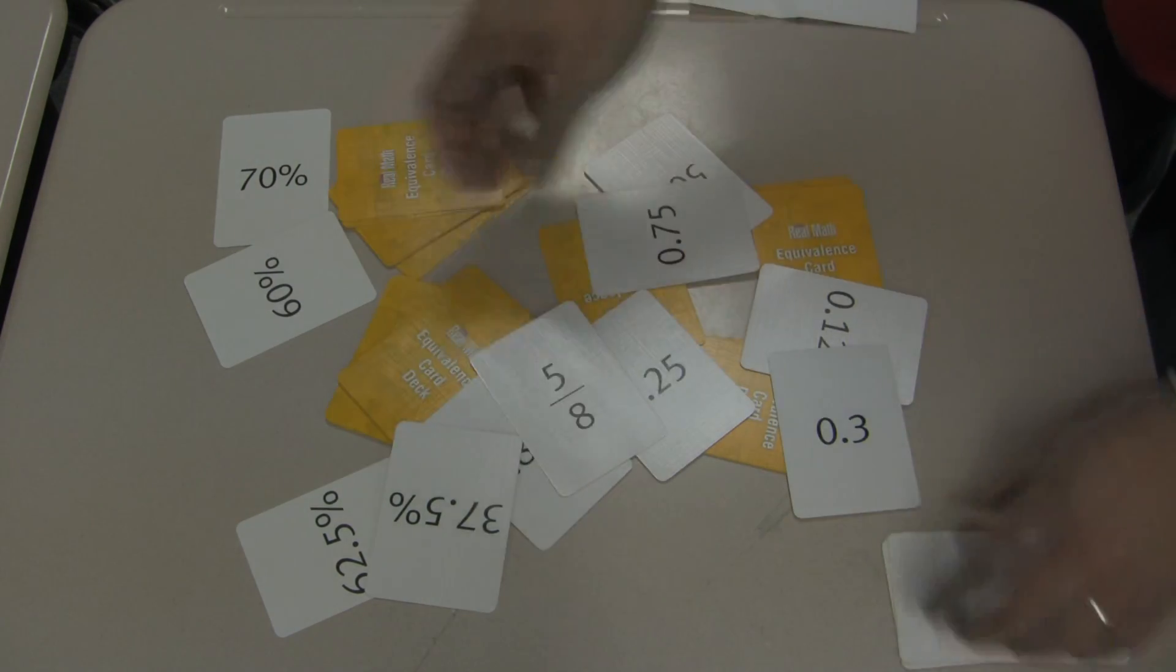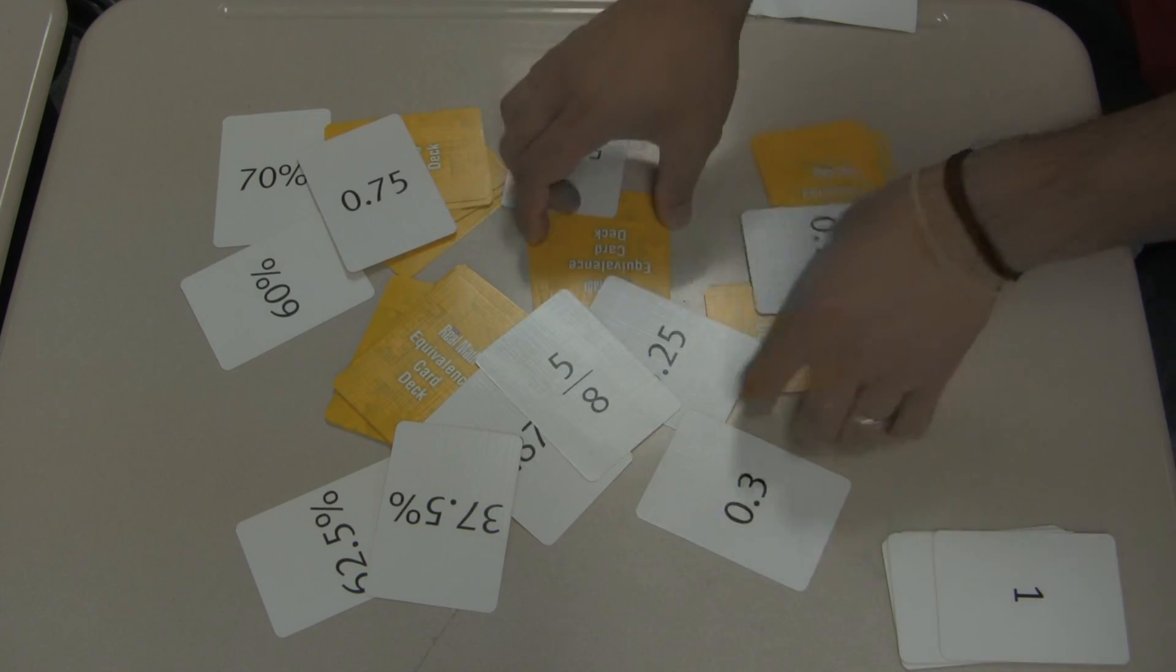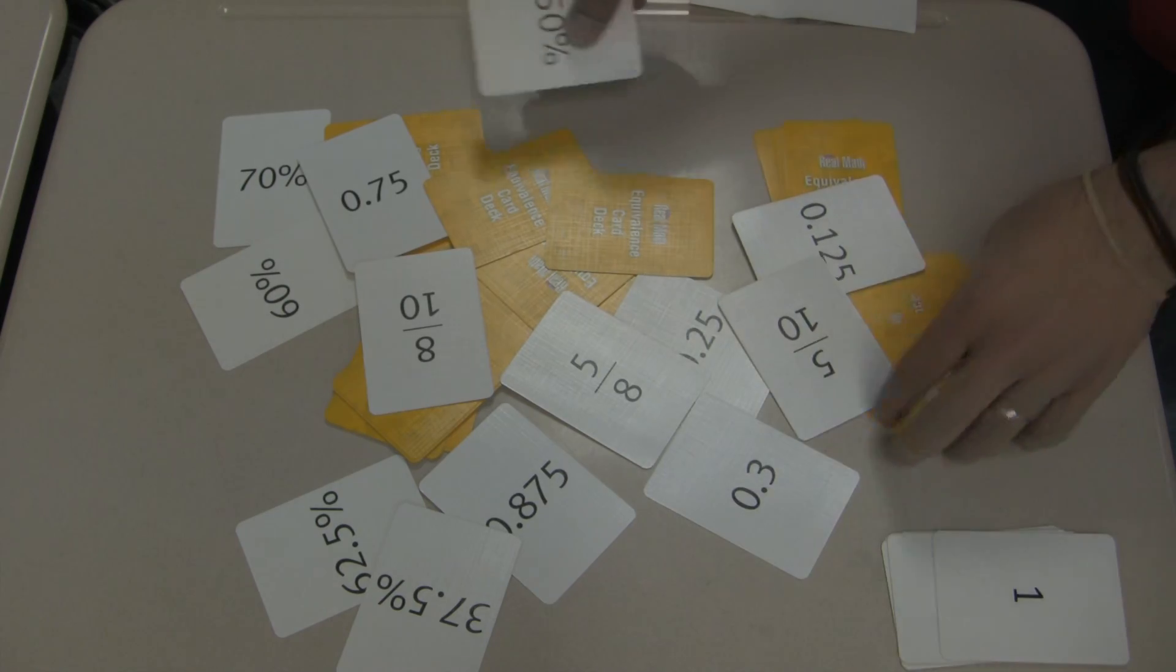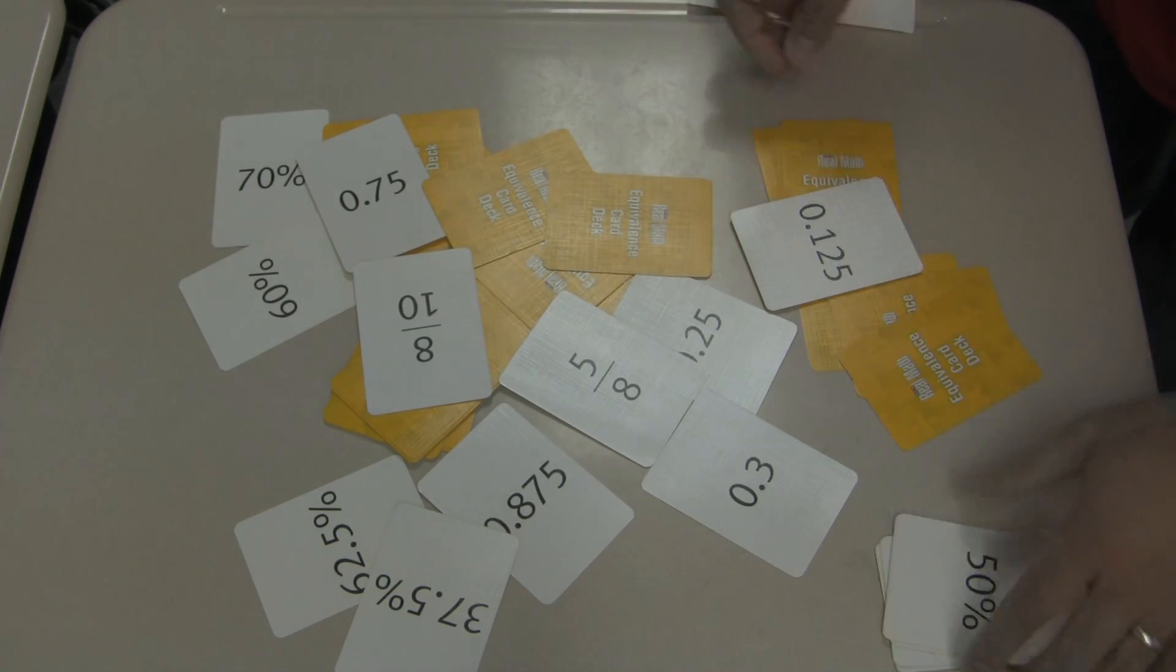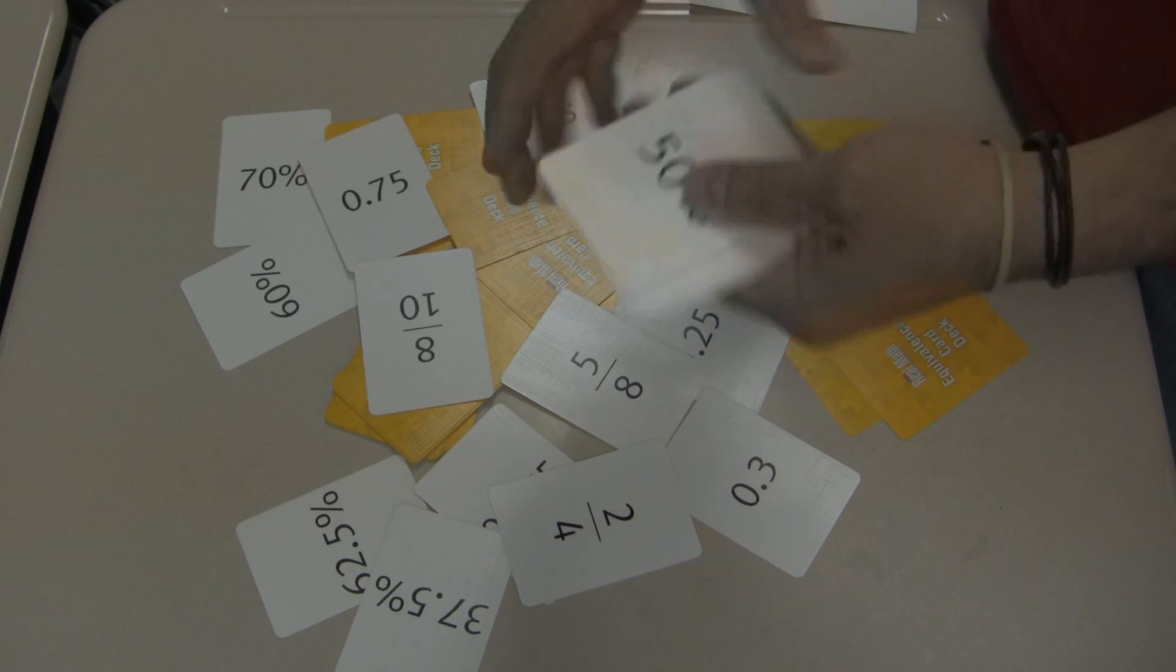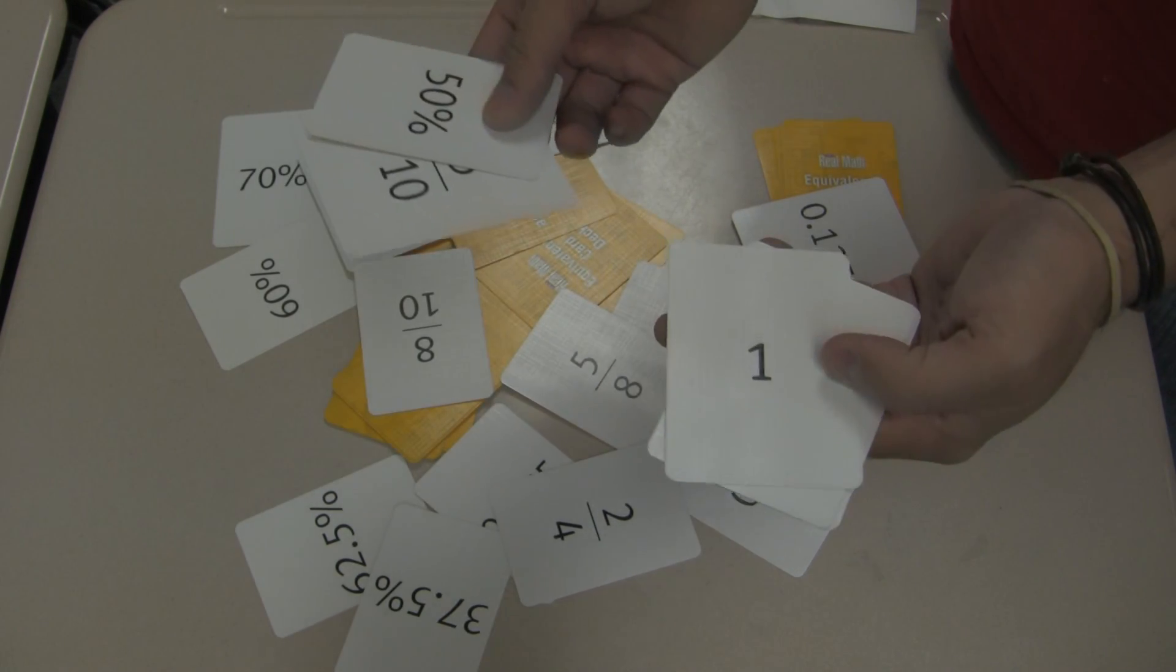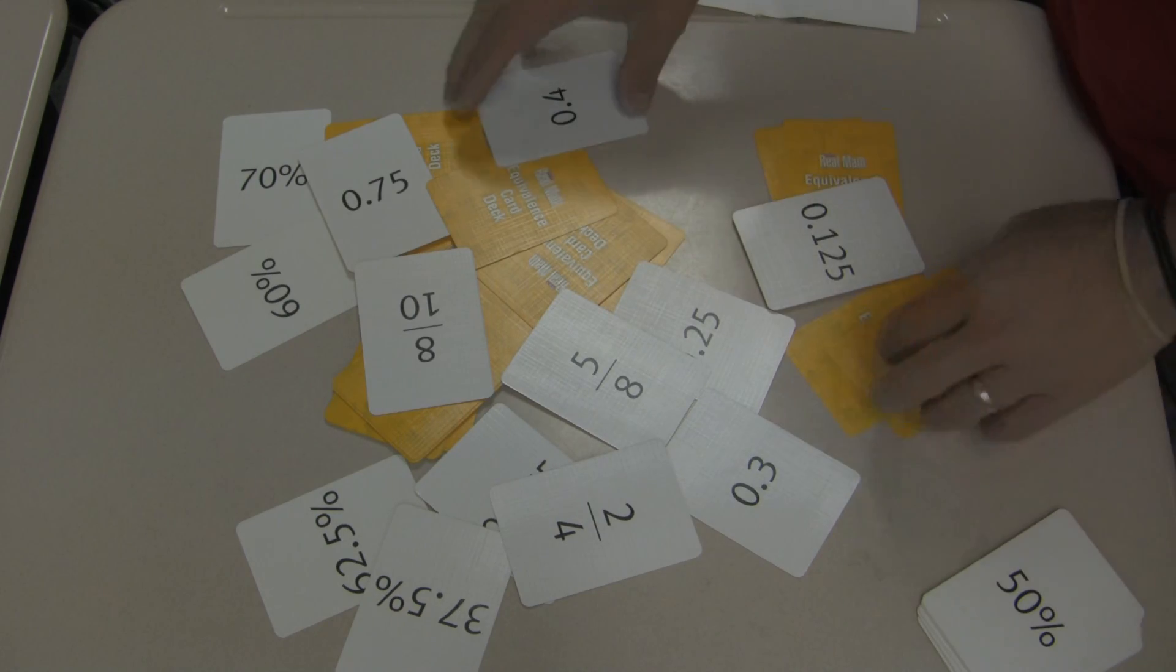So everybody's just frantically grabbing. It doesn't matter who flips over what, as long as somebody's flipping over a card. And it takes a while to flip over cards, right? So people just going crazy flipping cards and grabbing. You know, 50 percent, 5 tenths, great. And the person with the most bundles of one at the end of the game wins.